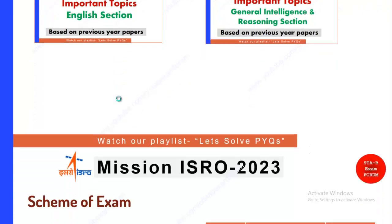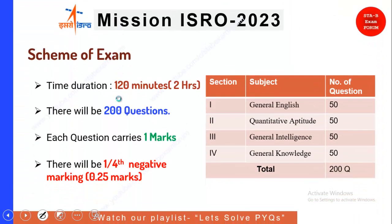The scheme of exam for this ISRO Assistant UDC and JPA exam is: there will be 120 minutes, that is 2 hours, and there will be 200 questions. Each question carries one mark and there will be a negative marking of 0.25 marks, that is one-fourth.